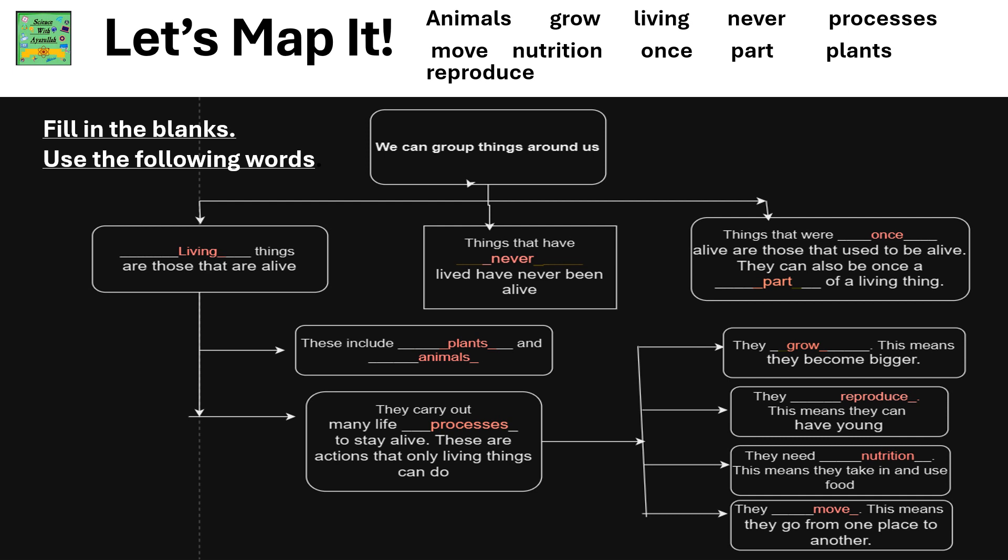The second group is things that have never been alive. The third group is things that were once alive, or used to be alive — they can be once a part of a living thing.